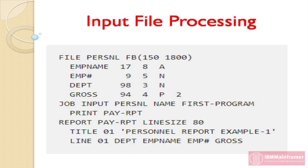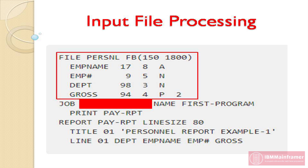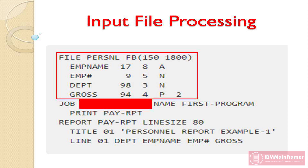Because our sample program has only one input file, PERSNL, the input parameter on the job statement is optional. Without it, the program looks for input and uses the only file in our library section, PERSNL. If you do not specify input, the program looks for input and uses the first file described in the library section.